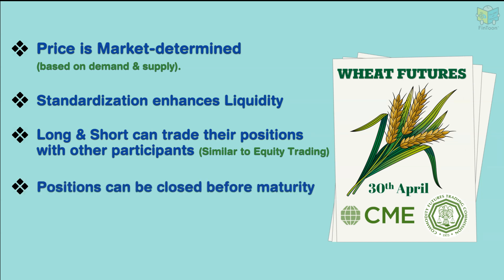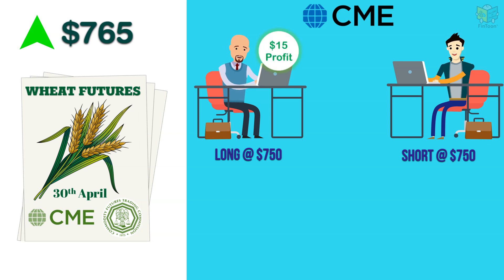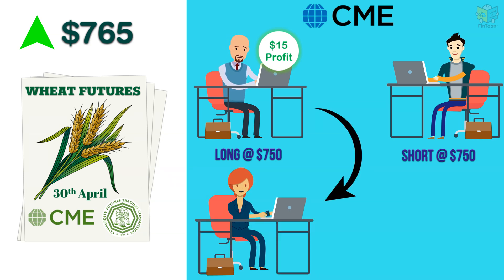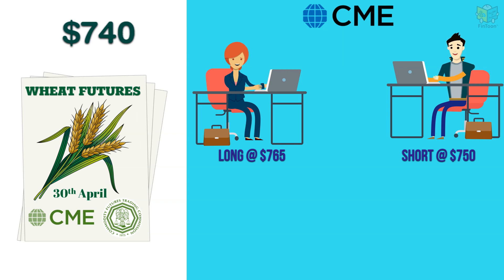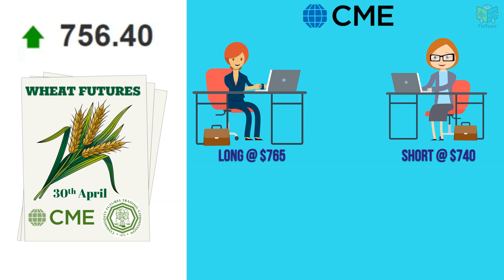The traders can exit or close out their positions if the price movement is favorable. For example, if the price increases, the long may want to book profits and exit the contract by selling it to someone else through the stock exchange. If the price decreases, the short can book profits and exit the contract by selling it to someone else. Thus, the contracts need not be held till expiry and positions can be closed prior to the expiry or settlement date.